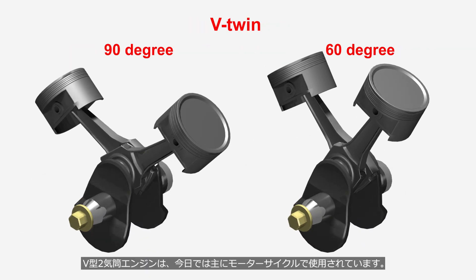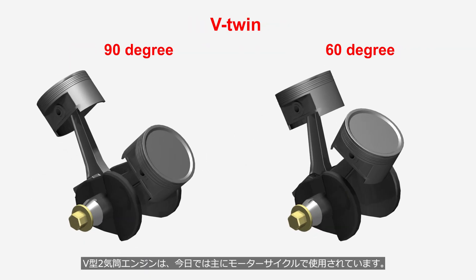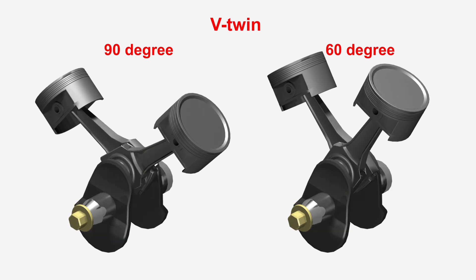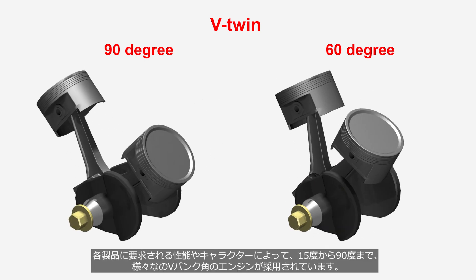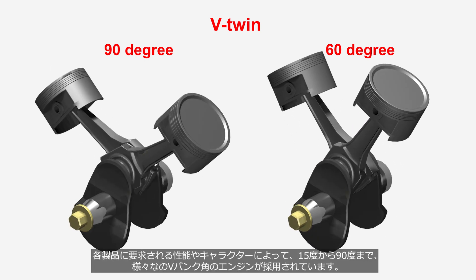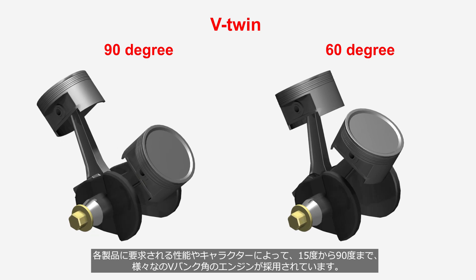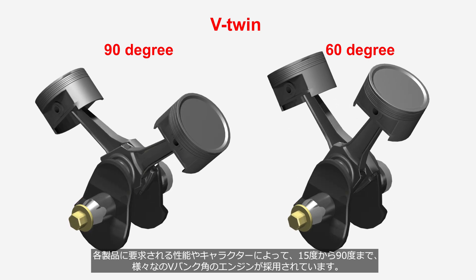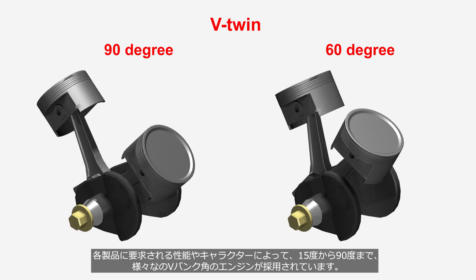V-twin engines are mainly used in motorcycles today. Various V-bank angle engines ranging from 15 degrees to 90 degrees are adopted based on the performance requirements and character of each product.